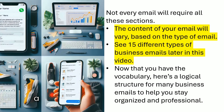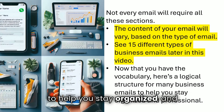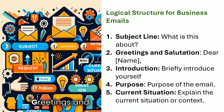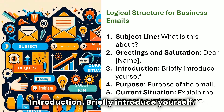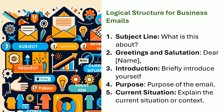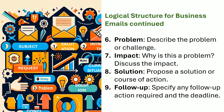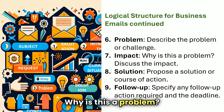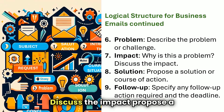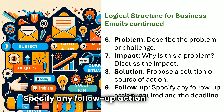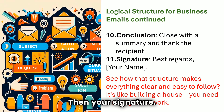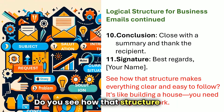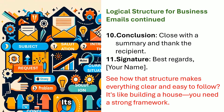Now that you have the vocabulary, here's a logical structure for many business emails to help you stay organized and professional: subject line, greetings and salutation, introduction, purpose, current situation, problem, impact, solution, follow-up, conclusion, and then your signature — 'Best regards' and your name. Do you see how that structure makes everything clear and easy to follow? It's like building a house — you need a strong framework. Now let's dig deeper into each item.